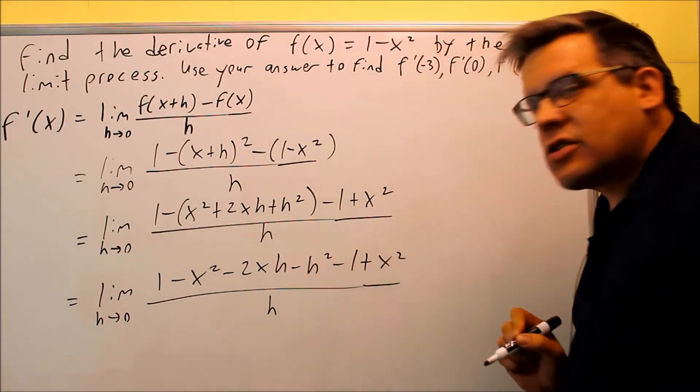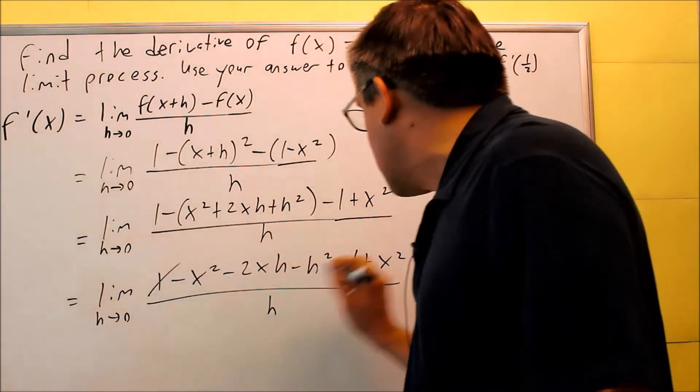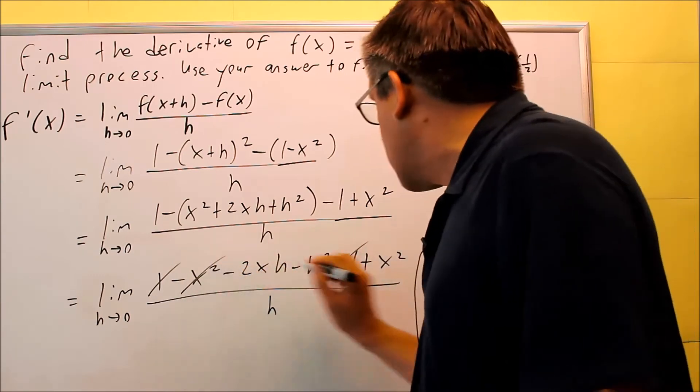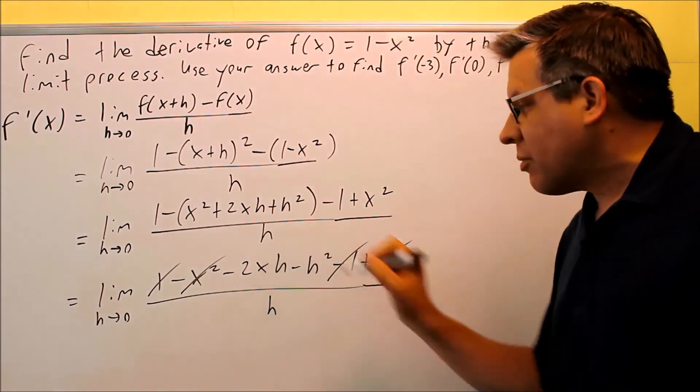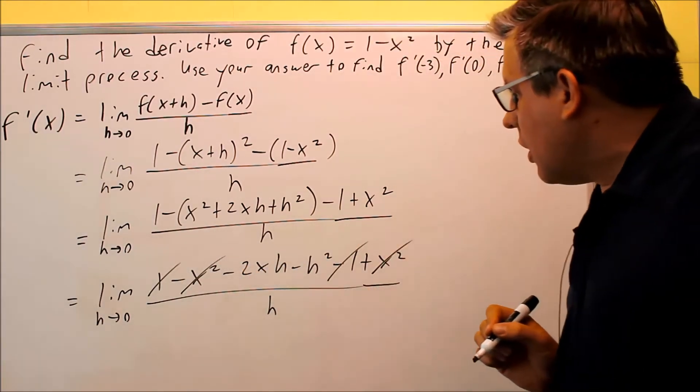Now we're going to cancel out like terms. The 1 cancels, and the x squares cancel, and then we're left with something that has h's only in the answer.